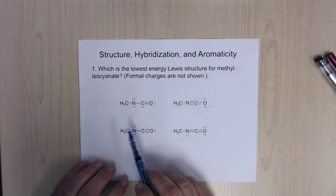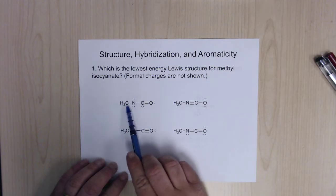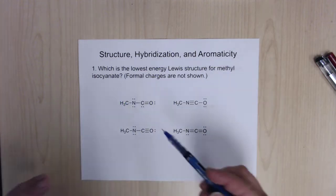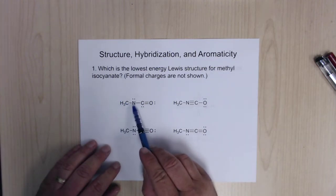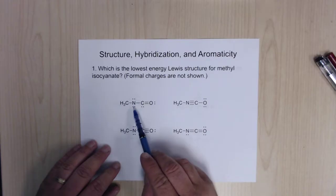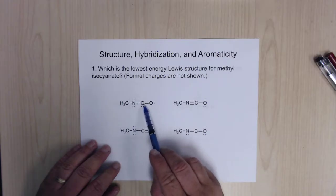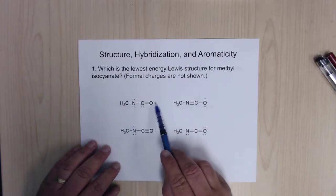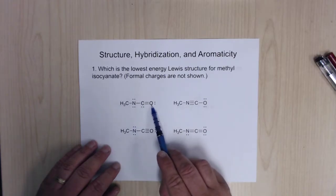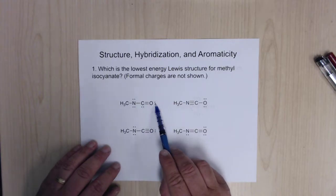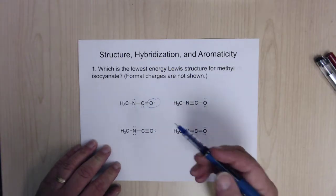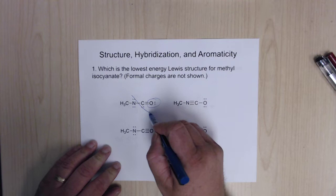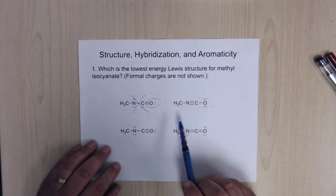If we look at this one here — the methyl is going to have its octet filled. Nitrogen has it: 2, 4, 6, 8. Carbon does: 2, 4, 6, 8. But oxygen only has 2, 4, 6 — so this one does not have its octet filled, so it's not going to be it. We can cross that one off.